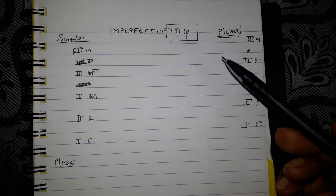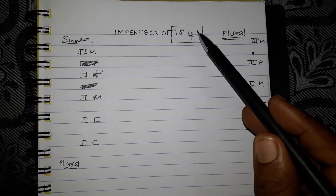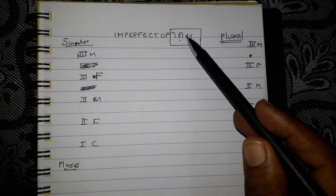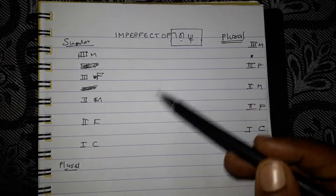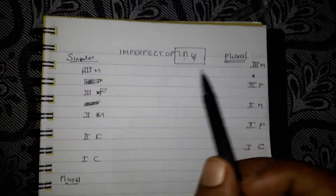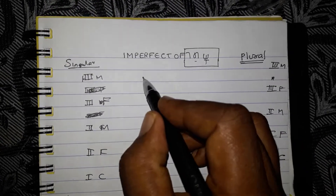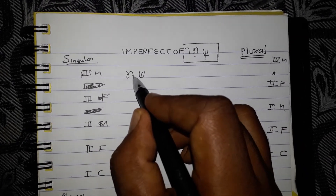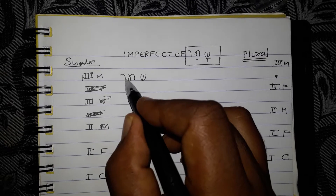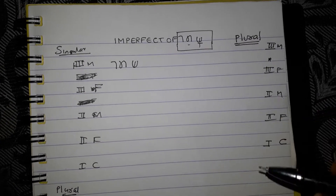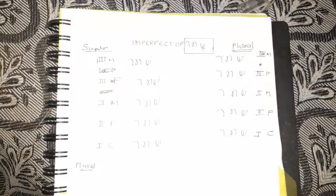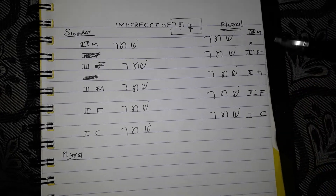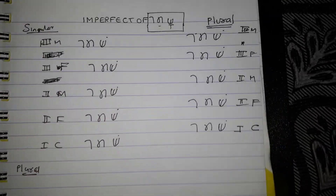Then you had to write the root of Shamar. Take out the vowel, then write Shamara from beginning to end. So now you have written Shamar from beginning to end without vowel.